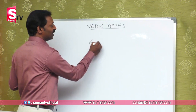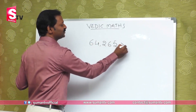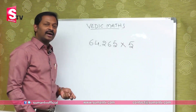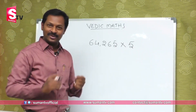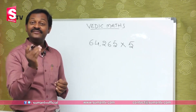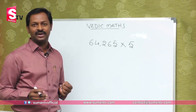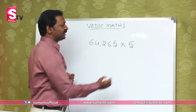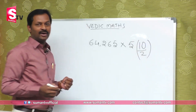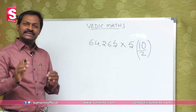Suppose 64,265 is multiplied by 5. There are two important methodologies here. One: multiply by 10 and divide by 2, since 5 equals 10 by 2. So divide each digit by 2 from left to right: 6÷2=3, 4÷2=2, 2÷2=1, 6÷2=3, giving us the answer 3,21,325.